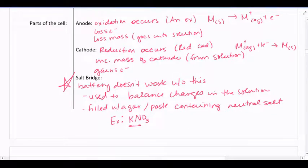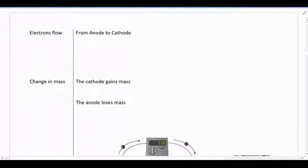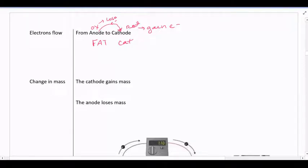If you have a choice and they're asking you to choose the salt, I strongly recommend potassium nitrate. Electrons always flow from the anode to the cathode — remember 'FAT.' At the anode, oxidation happens, which means we lose electrons. At the cathode, reduction happens, which means we gain electrons. So it makes sense: we give up electrons from the anode and they end up at the cathode.